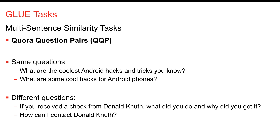A harder non-equivalent example: Donald Knuth appears in both questions, but 'If you received a check from Donald Knuth, what did you do and why?' versus 'How do I contact Donald Knuth?' are totally different. Donald Knuth sent small checks to people who found bugs in his books — finding an error in Knuth's work requires almost superhuman intelligence, so professors who received these checks just hung them on the wall. But how to contact him is a completely different question.